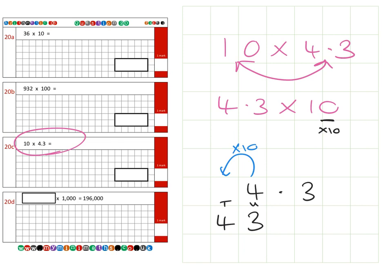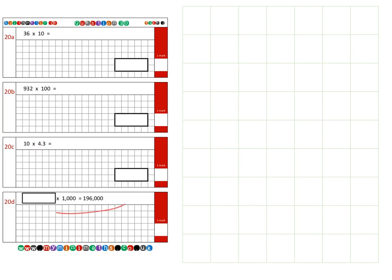And finally, we're on to question 20d. Now this time we've got a missing value. So let's have a look—we have a missing value we're going to multiply by a thousand.